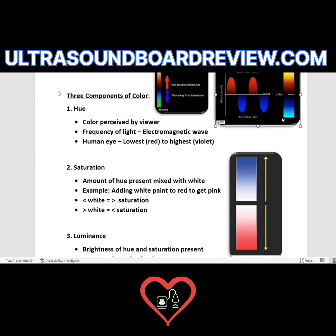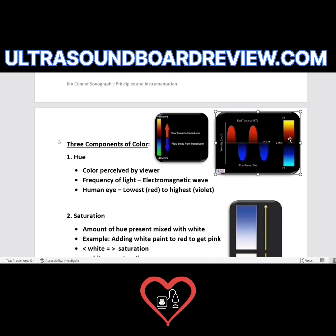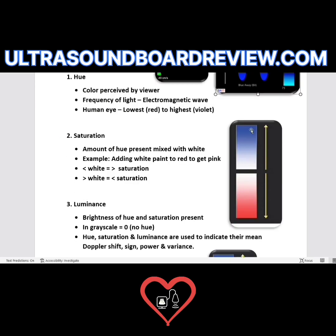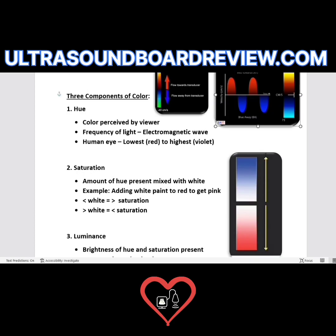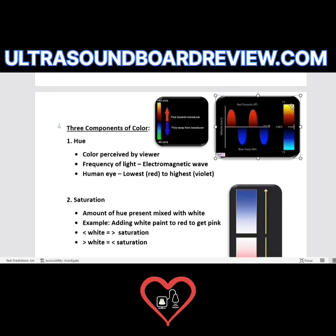Color Doppler. One color map shows red on top and blue on bottom; another shows blue on top and red on bottom. Whichever color is on top — whether red, blue, green, or purple — indicates blood flow towards the transducer, a positive Doppler shift.